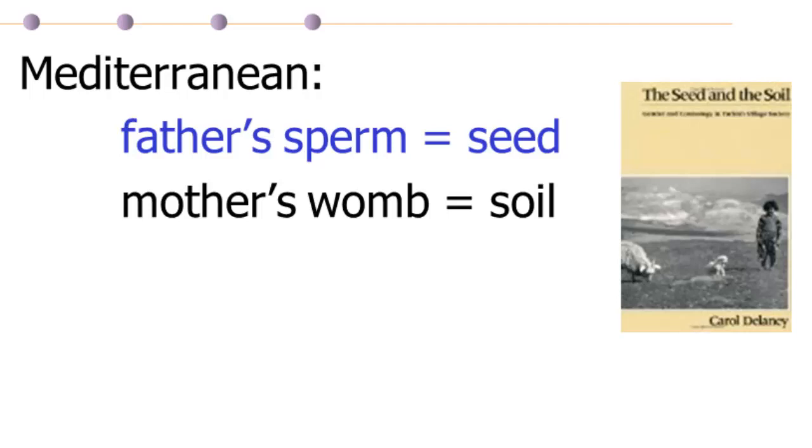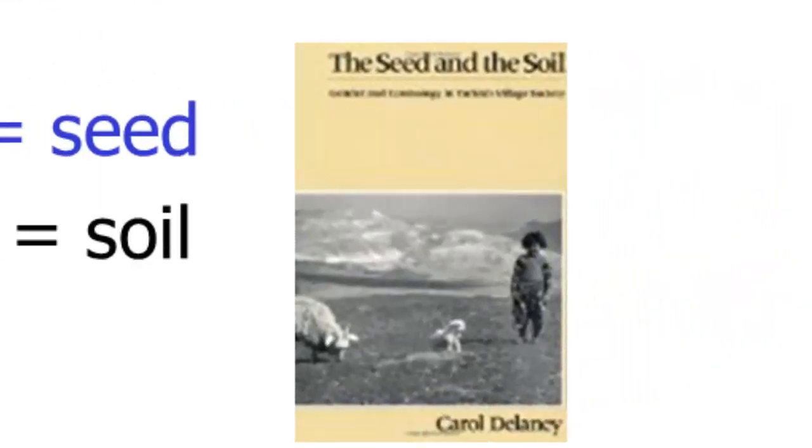And this gives the majority of the substance of the child over to the father. Basically, you're the product of your father's seed. And your mother is just where that seed happens to grow and be planted. If you want to learn more about that, a really good ethnography on it is called The Seed in the Soil, and that looks at patrilineal descent in Turkey.